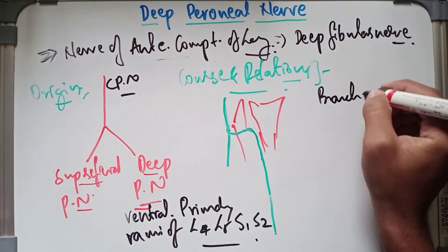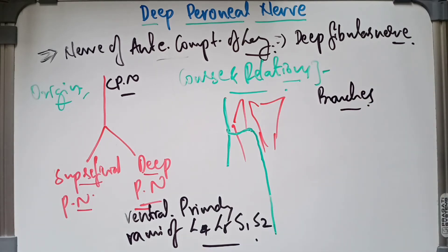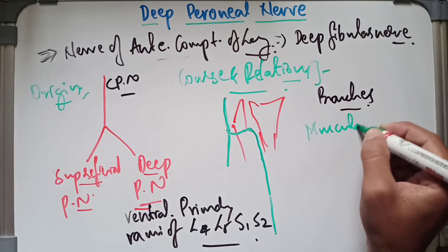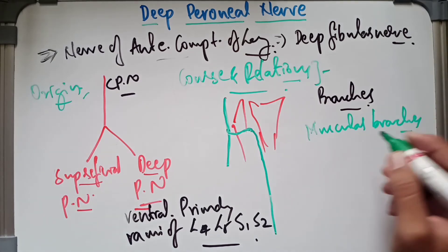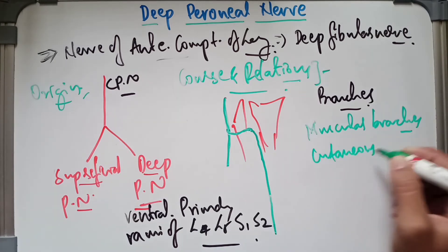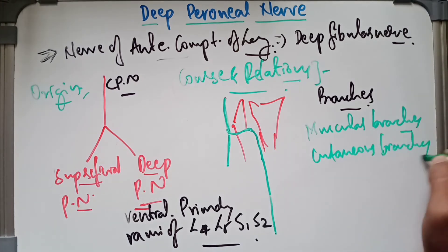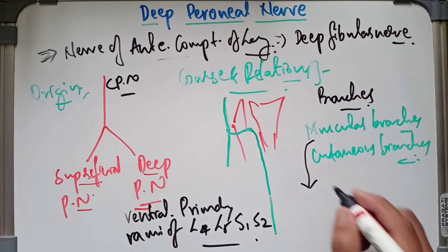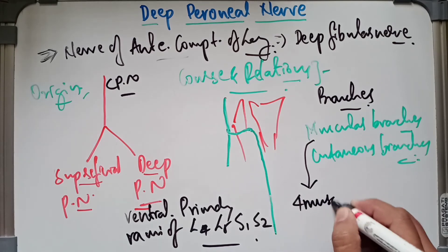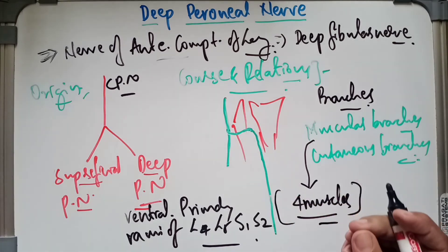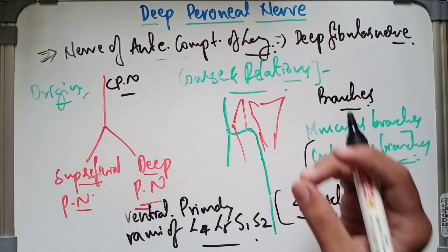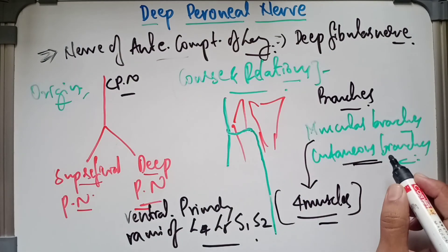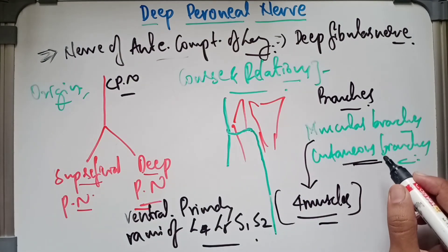Moving on to the branches of the deep peroneal nerve: there are muscular branches and cutaneous branches. The muscular branches supply all four muscles of the anterior compartment of the leg, as well as the extensor digitorum brevis, which is situated on the dorsum of the foot.